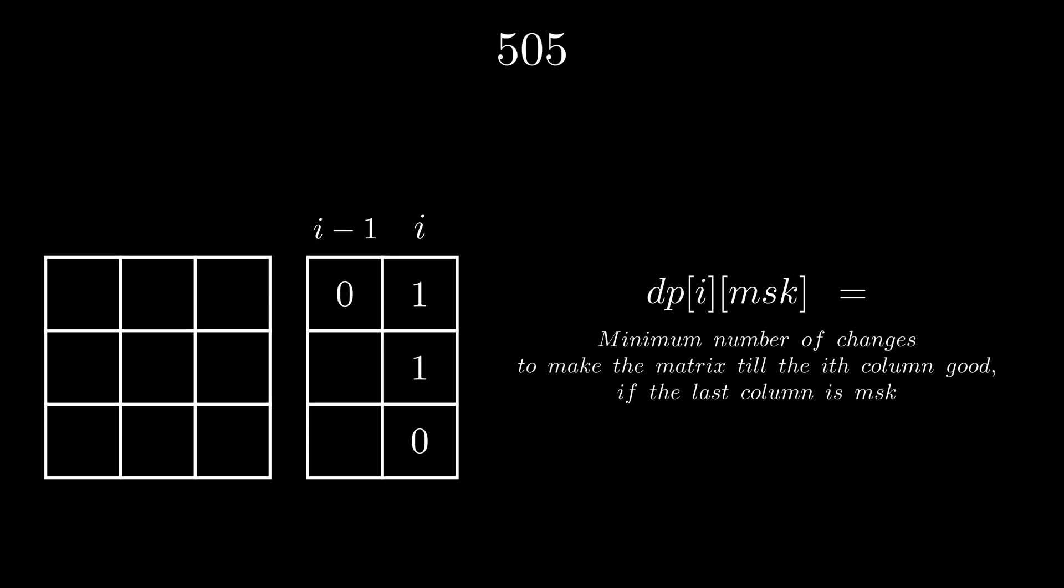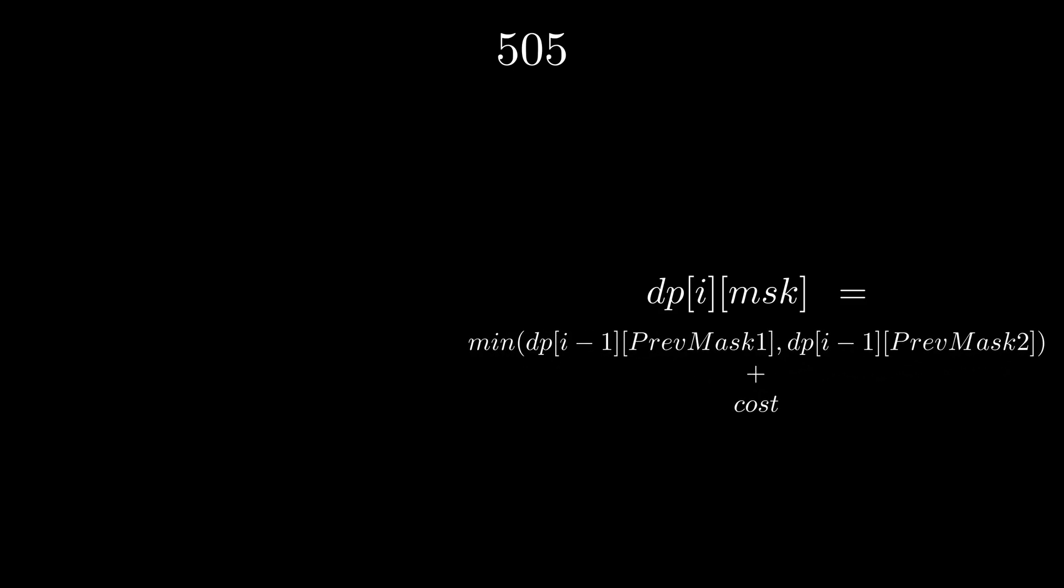But what if the top bit is 0? Again, we end up with the 3 element filled sub-matrix, from where we can figure out what the rest of the previous mask will be. In this case, we get 3. Hence the previous mask in column i-1 can either be a 3 or a 4 if the mask in the ith column is 6. As the top bit for the previous mask can only be a 0 or a 1, we can transition over from at most two states for a particular mask.